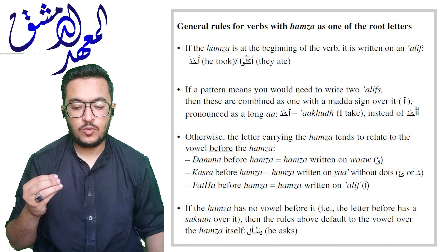Otherwise, the letter carrying the Hamza tends to relate to the vowel before it: a Dammah before Hamza means it is written on a Waw; a Kasrah before Hamza means it is written on a Ya without dots; a Fathah before Hamza means it is written on an Alif. If the Hamza has no vowel before it — that is, the letter before has a Sukoon over it — then the rules default to the vowel over the Hamza itself.